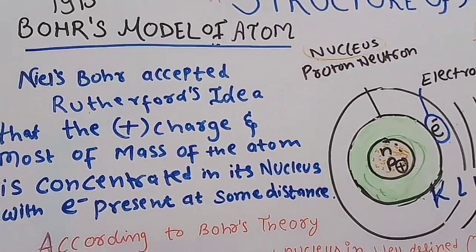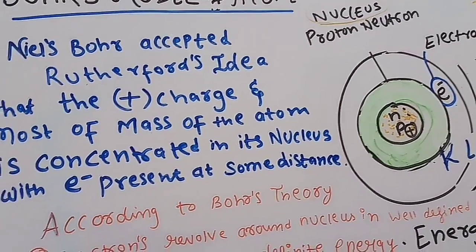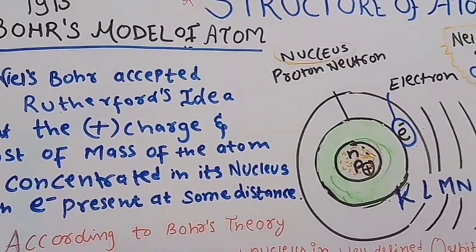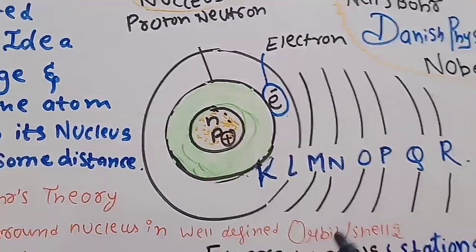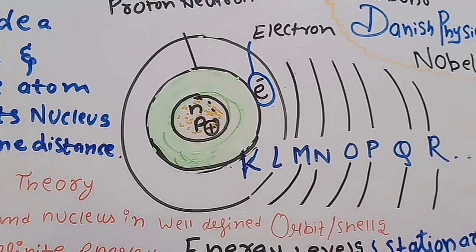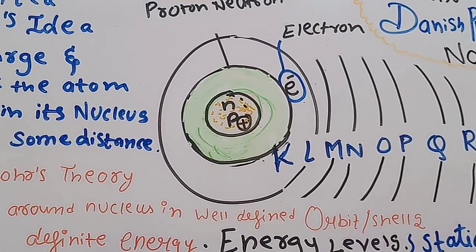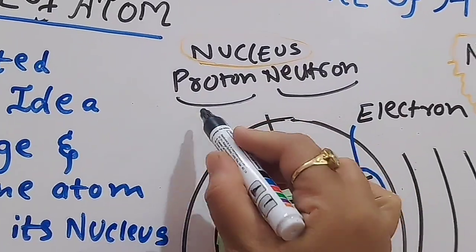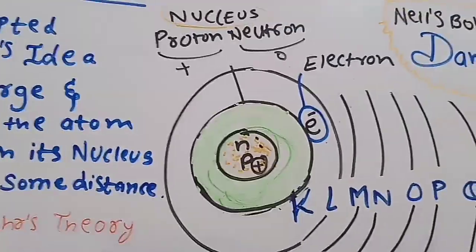The most famous model, which we still consider today, is the Bohr's model of the atom. Niels Bohr accepted Rutherford's idea that the positive charge and most of the mass of the atom is concentrated in the nucleus, with electrons present at some distance. The main idea: the positive charge is concentrated at the center; electrons revolve around in energy orbits. The nucleus, composed of protons (positively charged) and neutrons (no charge), is at the center.